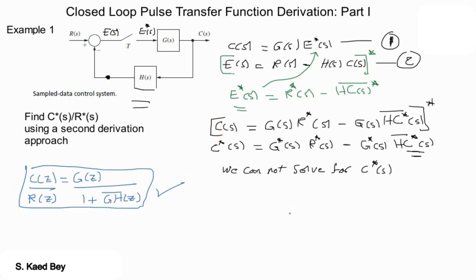To conclude, by starring equation 2 first we couldn't find a relation for the C star of s. So before we develop a simpler method of analysis, let's take another simple example of a closed loop digital control system and try to find its pulse transfer function.